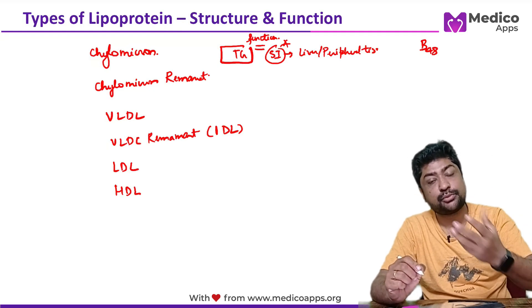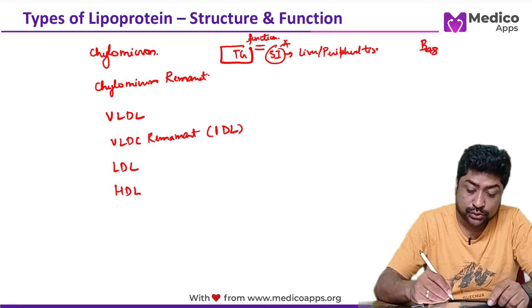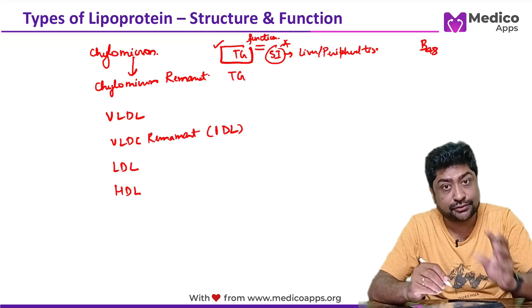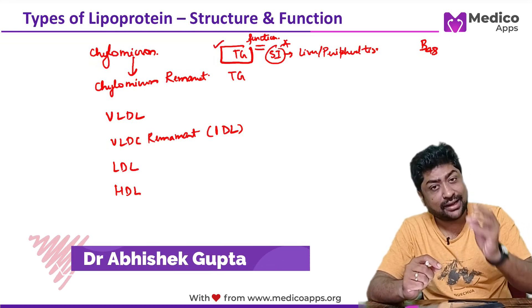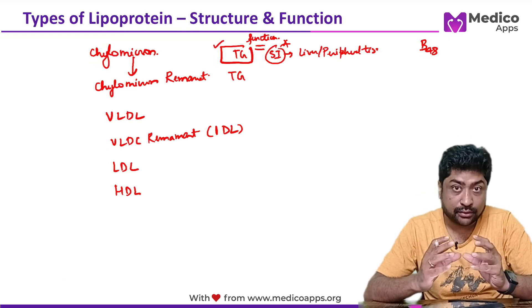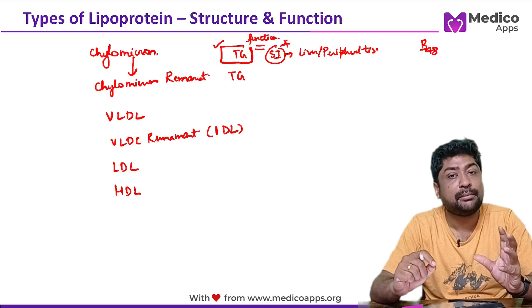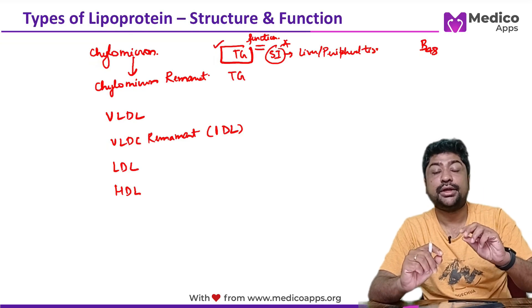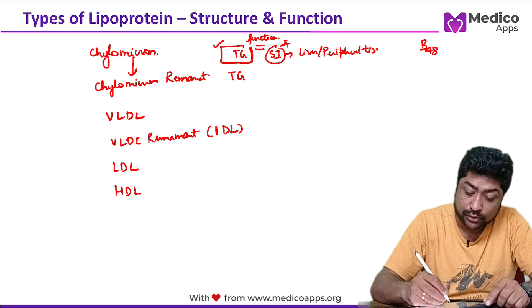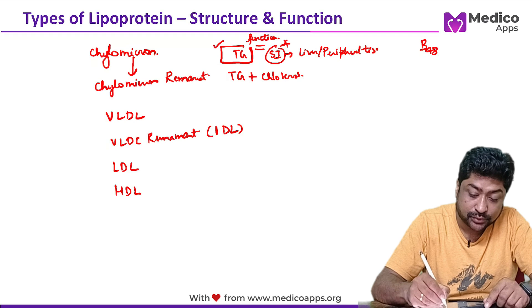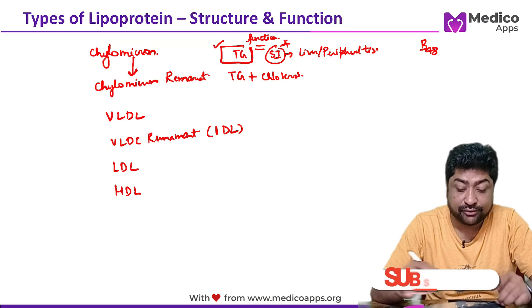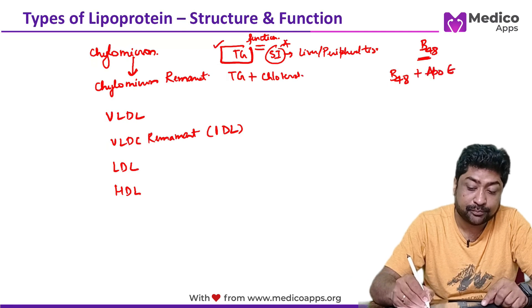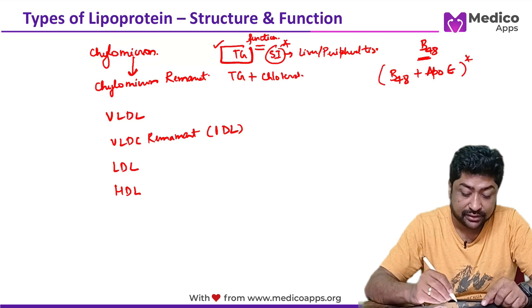As chylomicron distributes triglyceride to peripheral tissue, it picks up cholesterol and gets converted into chylomicron remnant. Initially it was primarily triglyceride — say 99% triglyceride and 1% cholesterol — but after distributing triglyceride it becomes roughly 30% triglyceride and 70% cholesterol. Chylomicron remnant carries both triglyceride and cholesterol, and has apoproteins B48 plus ApoE.